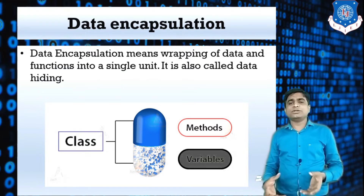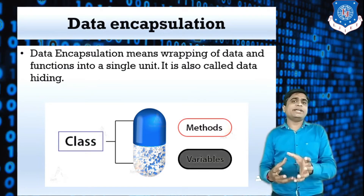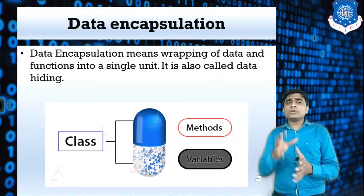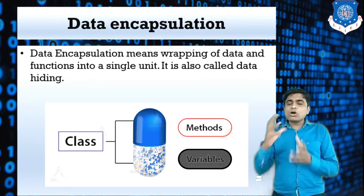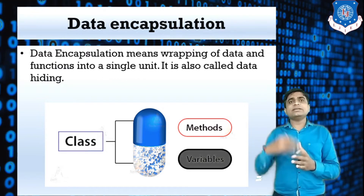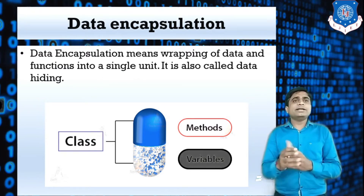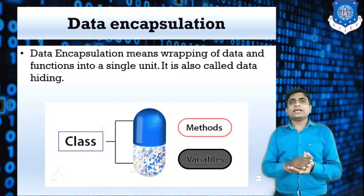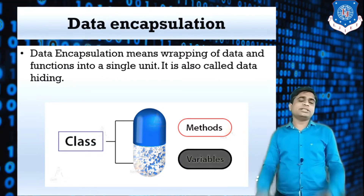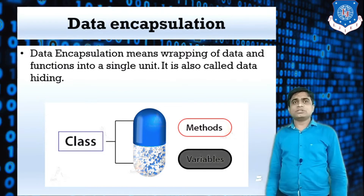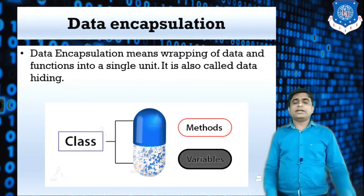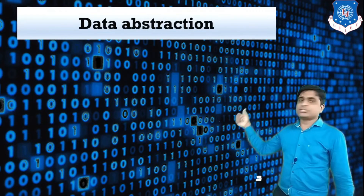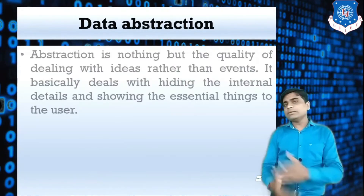Data is accessible only with the object of that particular class. If you want to access the data in the main function, you need to create an object of the class. All the data of the class are in hidden format — that's why it is called data hiding. This is also the most important feature as far as security is concerned.